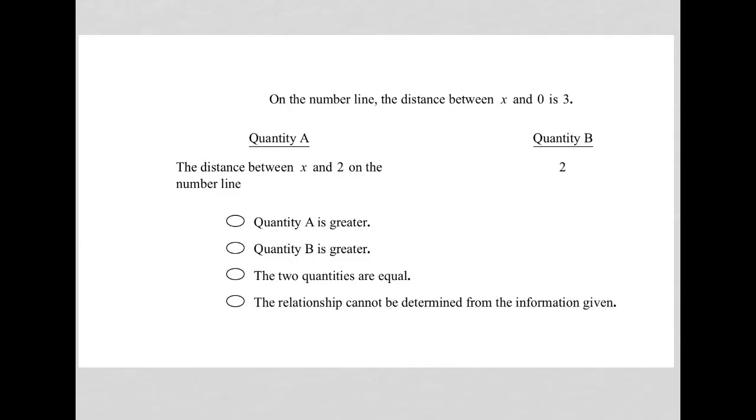So, this question says, on the number line, the distance between x and 0 is 3. So, I'm going to draw a number line. I know where 0 goes, so I'm going to put that in the middle.